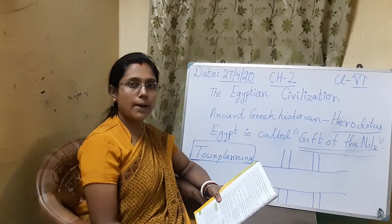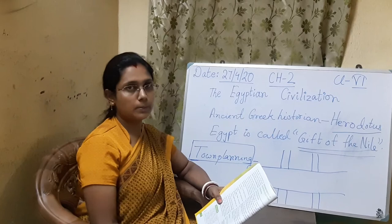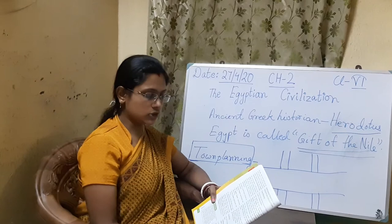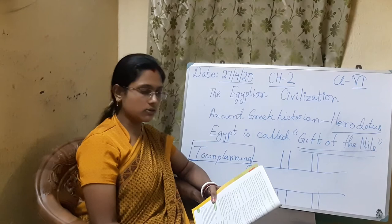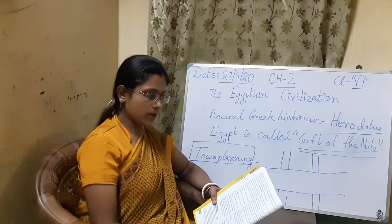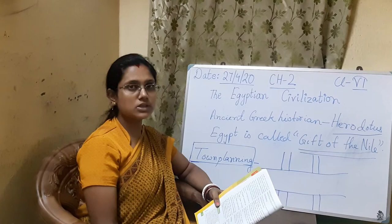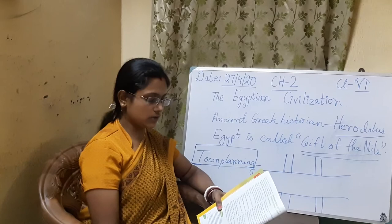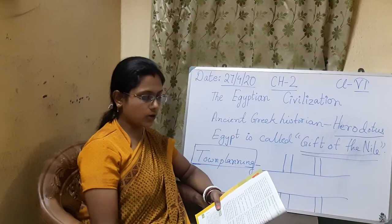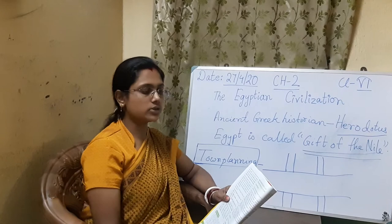From the earliest times, Egypt was divided into two parts: Lower Egypt and Upper Egypt. Around 3,200 BC these were united and ruled by Pharaohs — the rulers of Egypt are called Pharaohs. They built a brilliant civilization that lasted until the reign of Cleopatra, the last Pharaoh, in 30 BC.